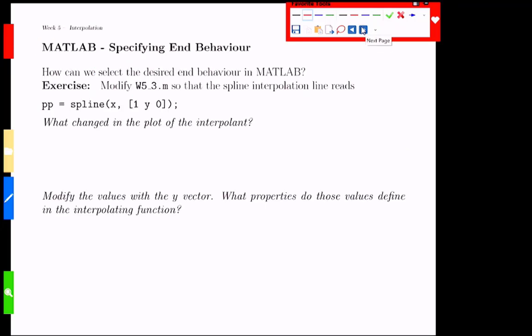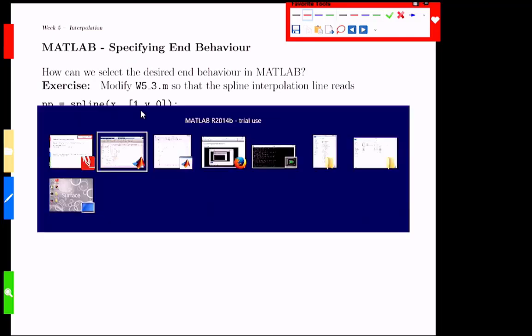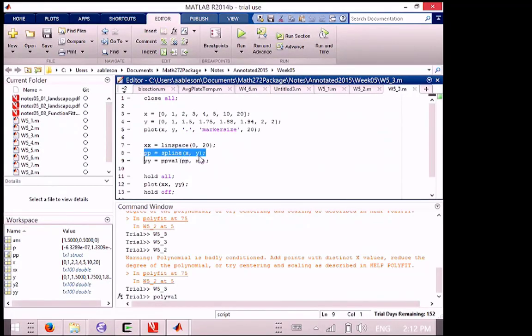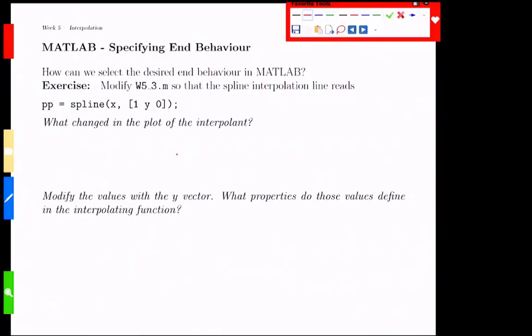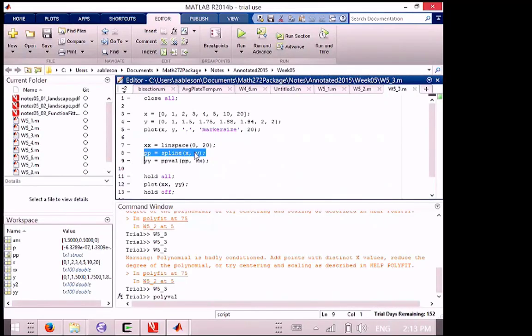So here's how we're going to specify this. If we take a look at the spline, this is the thing that creates the coefficients for our spline. Right now, it's x comma y. And I'm suggesting that we replace that with the y value gets expanded. It gets a one and a zero out front. One out front, zero afterwards.